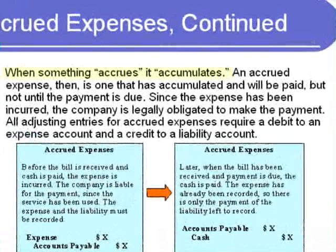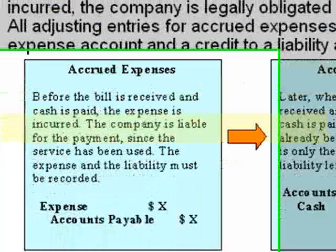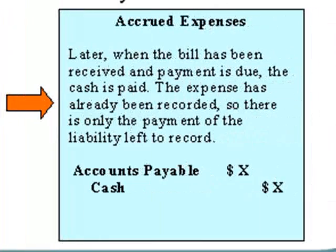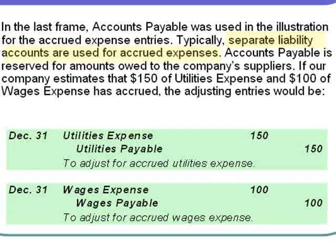Terminology: when something accrues, it accumulates. An accrued expense, then, is one that has accumulated and will be paid, but not until the payment due date. Since the expense has been incurred, the company is legally obligated to make the payment. All adjusting entries for accrued expenses require a debit to an expense account to record the expense and a credit to a liability account to record the obligation to make that future payment. Typically, when making adjusting entries for accruals, separate liability accounts with different titles are used for these accrued expenses.